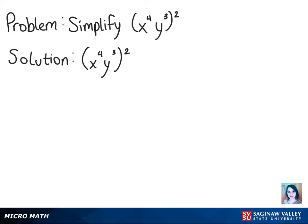We'll have to multiply the 2 into the 4 and into the 3. In doing so, we will have x to the power of 4 times 2, times y to the power of 3 times 2. Once we multiply those exponents through, we will get our final answer of x to the eighth power times y to the sixth power.